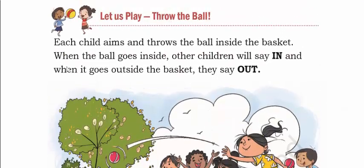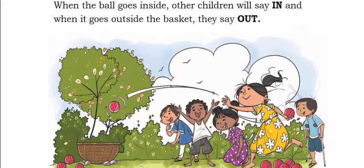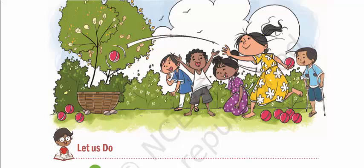Now let us play 'Throw the Ball.' Each child aims and throws the ball inside the basket. Here you can see these children playing — they are aiming for the ball to fall inside the basket, not outside. When the ball goes inside, other children say 'in,' and when it goes outside the basket, they say 'out.'